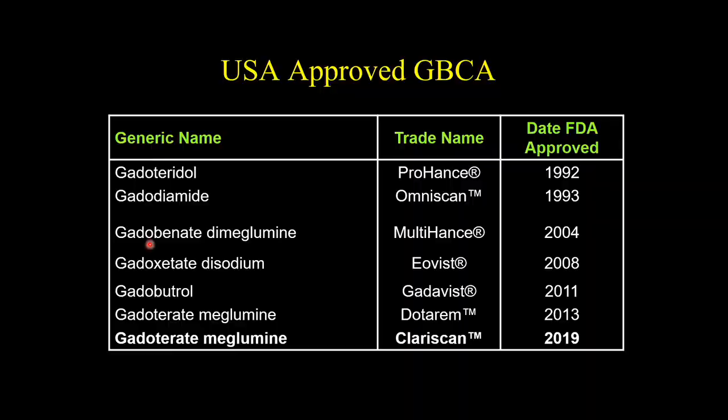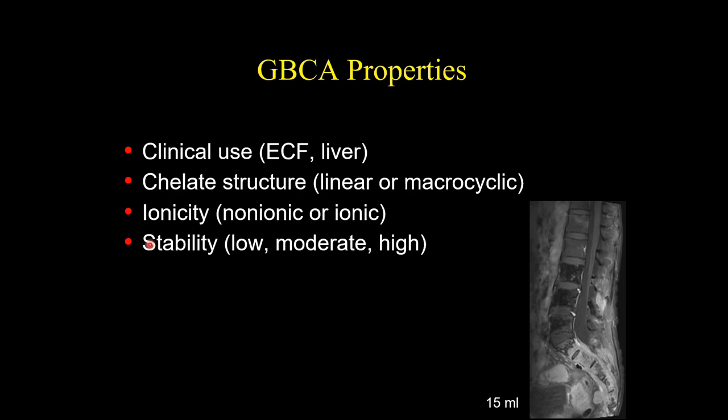At this point we have seven remaining contrast agents available for use in the United States and other parts of the world, with some differences. For our discussion today, we will concentrate on the extracellular fluid space agents — the typical agents we use for brain, spine, and vascular imaging — although we will also talk a little about agents with more liver specificity.